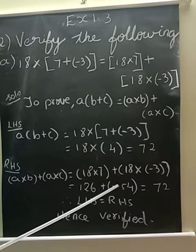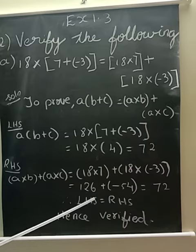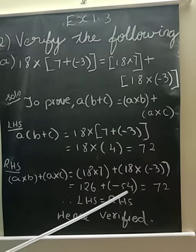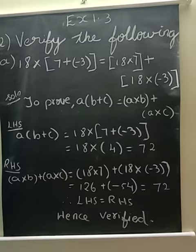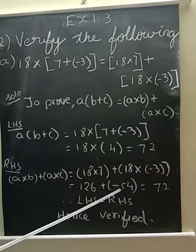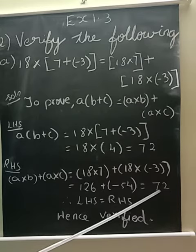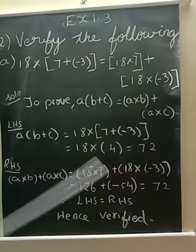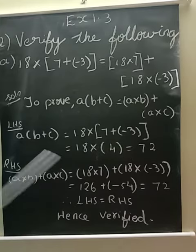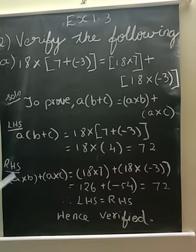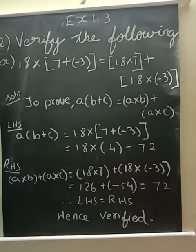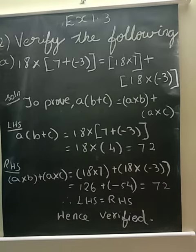Plus into minus, minus. Minus 54. Now 126 plus of minus 54, what we have to do? Subtract, because here it is plus and here it is minus. So I am going to subtract, and I am subtracting what I will get? It is 72. See, my left-hand side I am getting 72, right-hand side also 72. Therefore, LHS is equal to RHS. Hence it is verified.